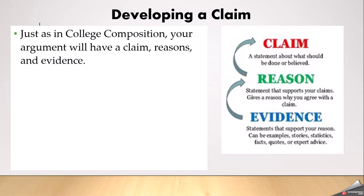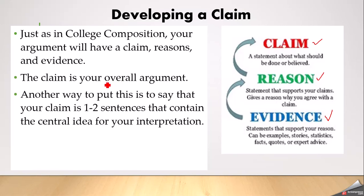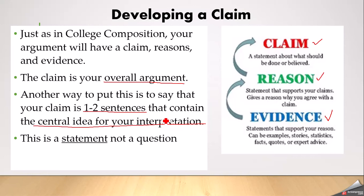The first step is developing your claim. In college composition, you learned about claim, reason, and evidence. For example: 'People should not smoke because it's harmful for their health — here is a research study showing what percentage of people get lung cancer from smoking.' That's a claim, reason, and evidence. The claim is the overall argument — basically one to two sentences that contain the central idea for your interpretation, such as 'the prominent theme of the poem is...' or 'the character is developed this way because...' — a statement, not a question.